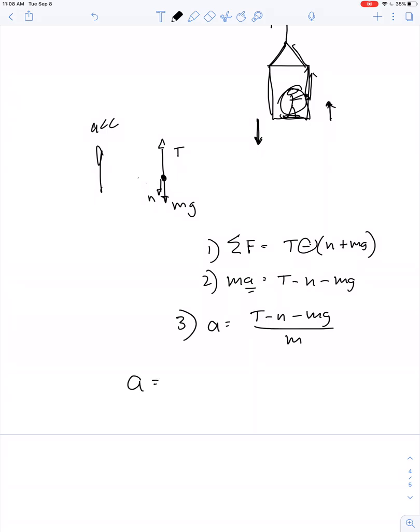A is T minus N minus mg all over m. So A is equal to - we know the tension is 600 newtons. We know the contact force. The floor pushes up on the feet with 360 newtons, so the feet push down on the platform with 360 newtons. 600 minus 360 minus 20 times 10, we'll just call that 200, all divided by 20.